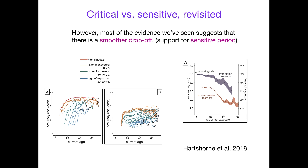Now, most of the evidence we currently have suggests that there is a smoother drop-off in ability — it's not like you suddenly go from all to nothing. These are various excerpts from Hartsorne et al. 2018, who looked at different ages of exposure: from zero to nine, from 10 to 19, from 20 to 30. This is particularly illustrative — the age of first exposure and your performance.